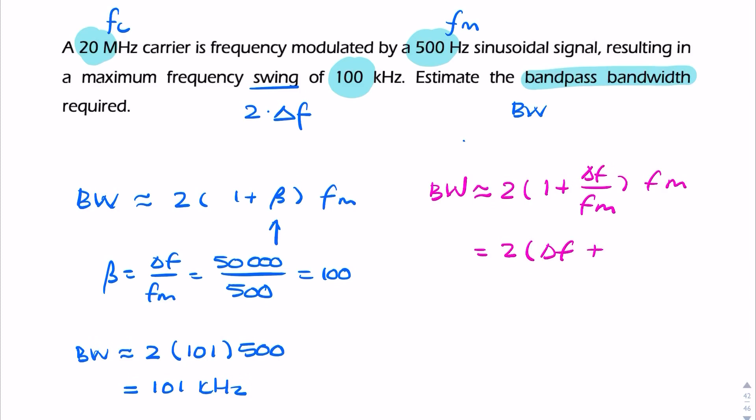And that gives us a really convenient way of writing the bandwidth: 2(delta f + fm). So if you know the frequency deviation and you know the message bandwidth, you can just add them together and multiply by 2.